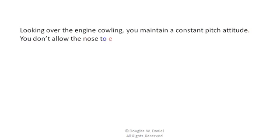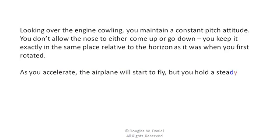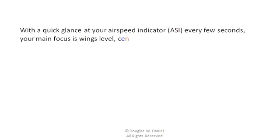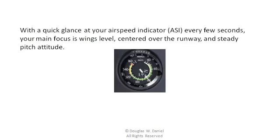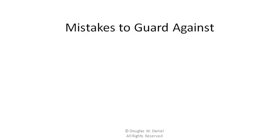Looking over the engine cowling, you maintain a constant pitch attitude. You don't allow the nose to either come up or go down — you keep it exactly in the same place relative to the horizon as it was when you first rotated. As you accelerate, the airplane will start to fly, but you hold a steady pitch attitude, staying centered over the runway. With a quick glance at your airspeed indicator every few seconds, maintain focus on wings level, centered over the runway, and steady pitch attitude. Once your ASI tells you that you are at your best rate of climb airspeed, increase your pitch attitude to maintain that airspeed. You are now climbing.